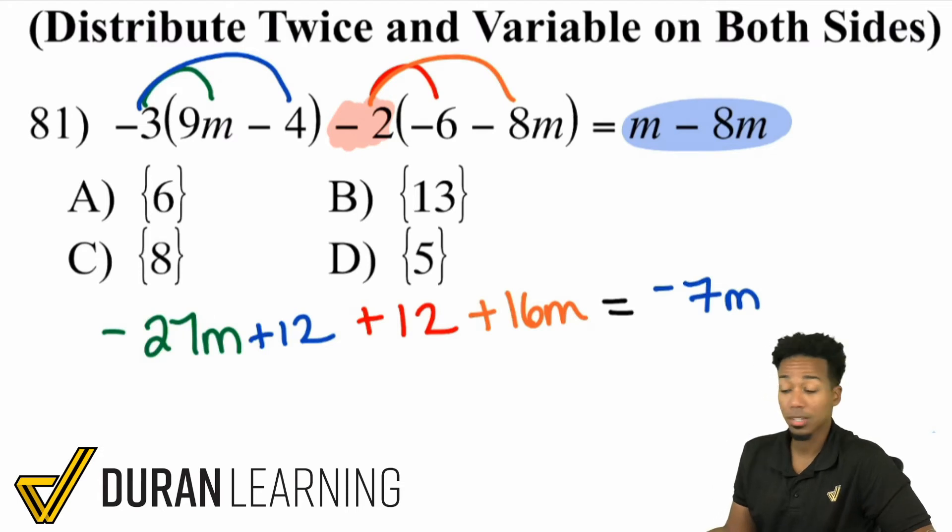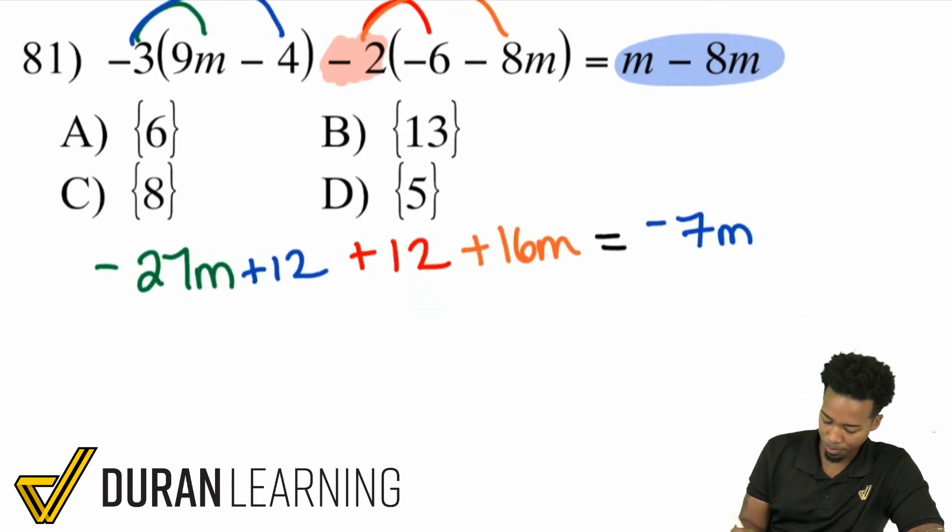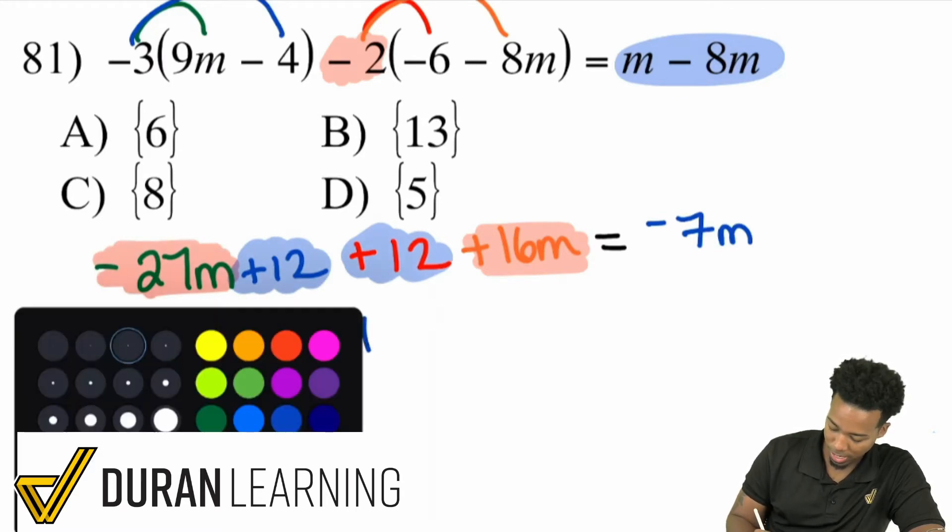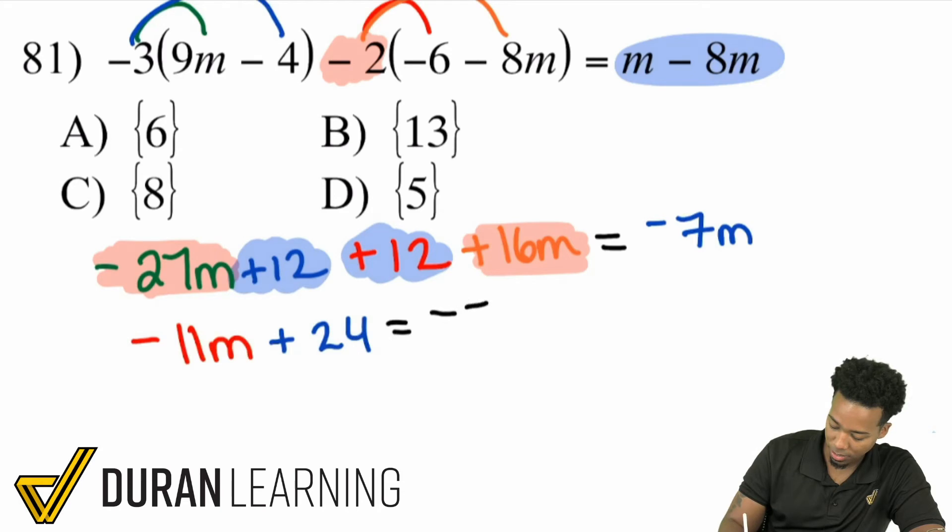So now that we are looking at this, notice how this becomes a lot easier now that we've actually started by simplifying and distributing. Let's combine like terms again, because we have negative 27m plus 16m. Negative 27 plus 16 is negative 11. So we have negative 11m. And over here, we have positive 12 plus 12, which gives us positive 24. On the right side, we still have that negative 7m.